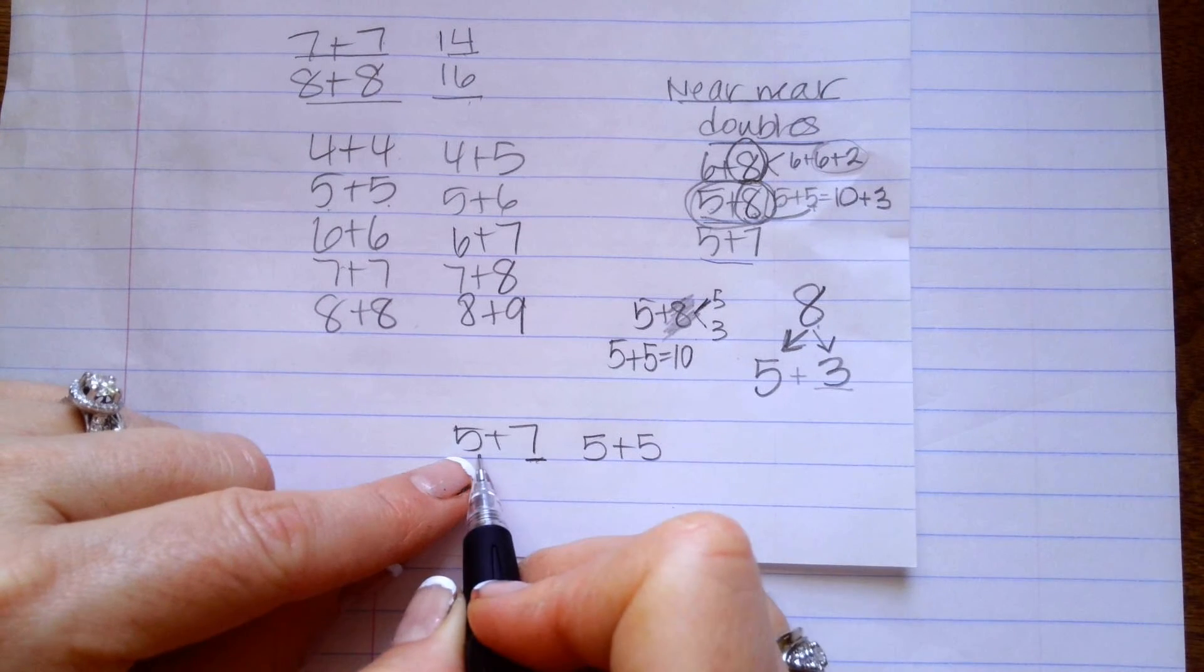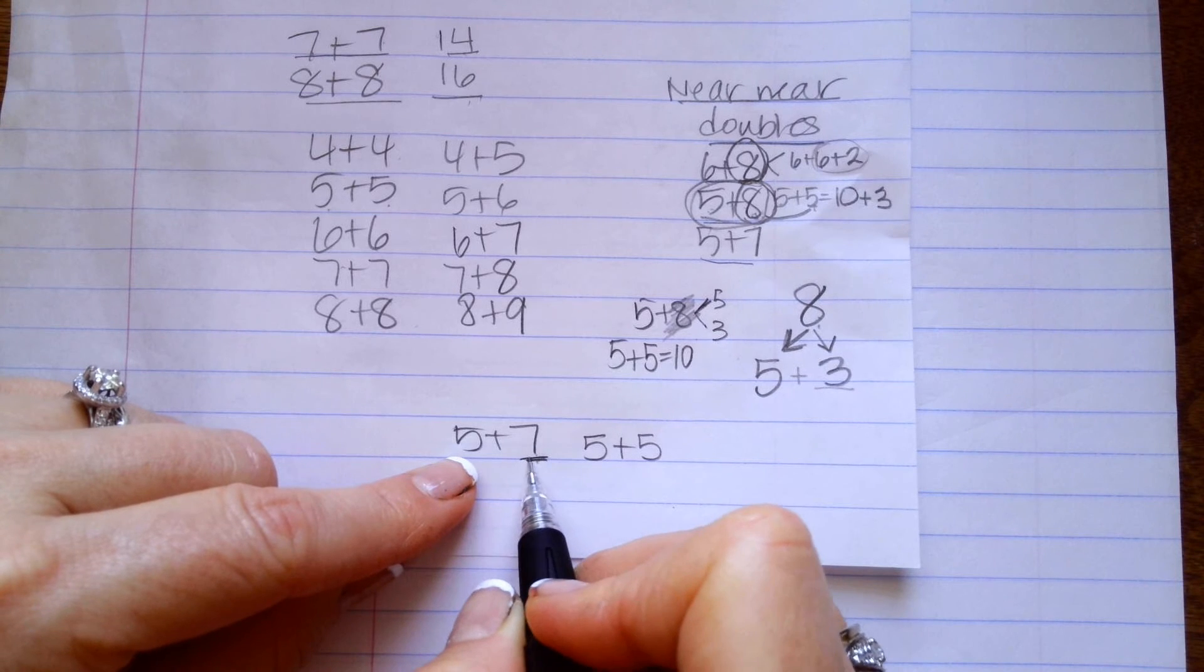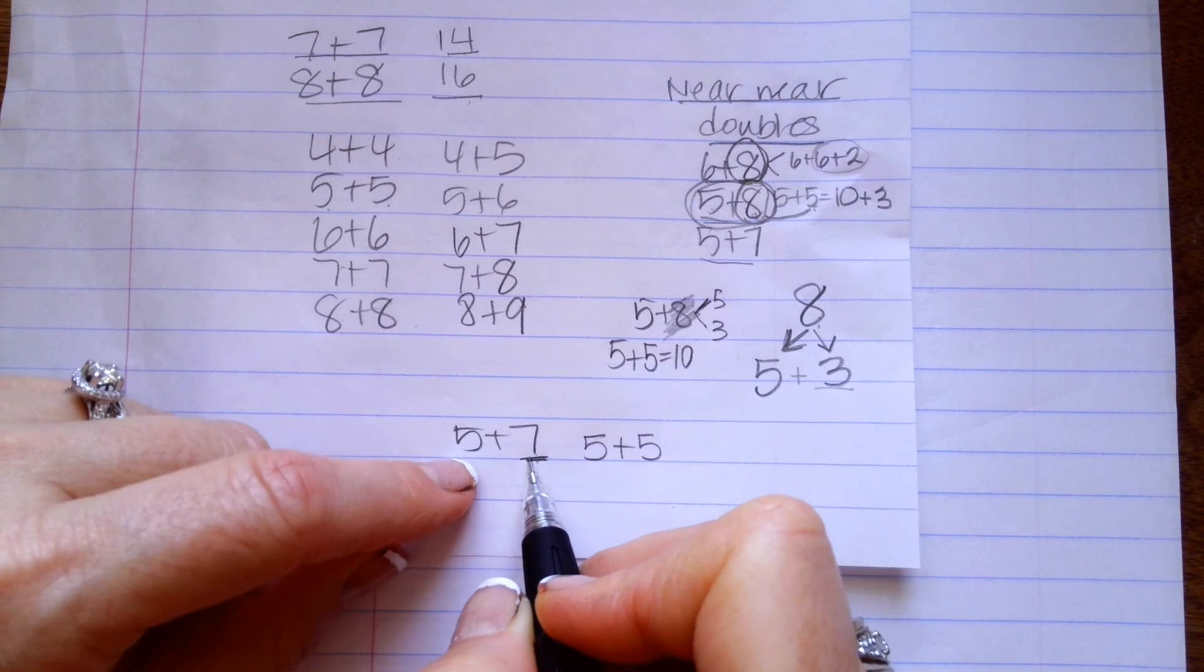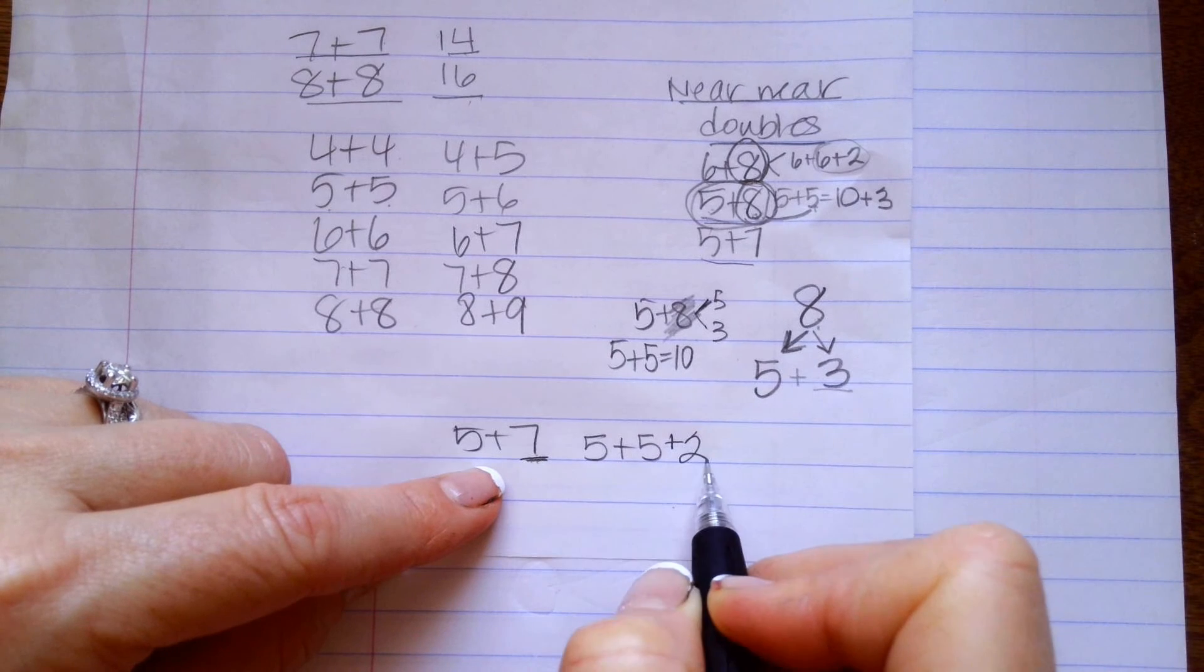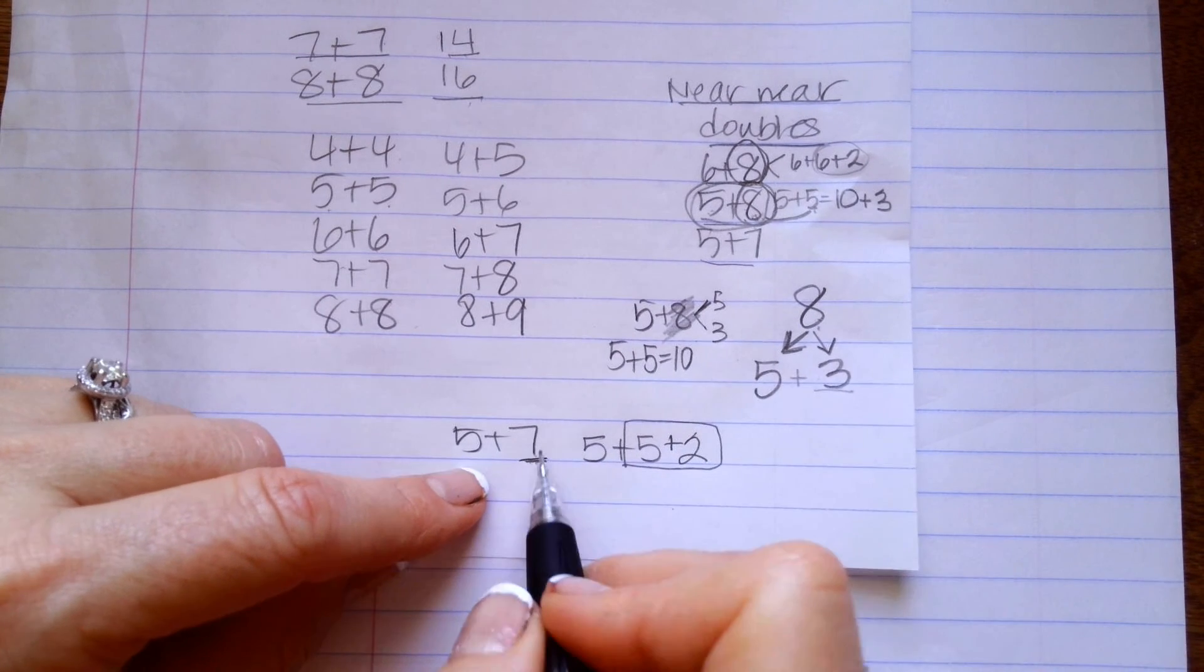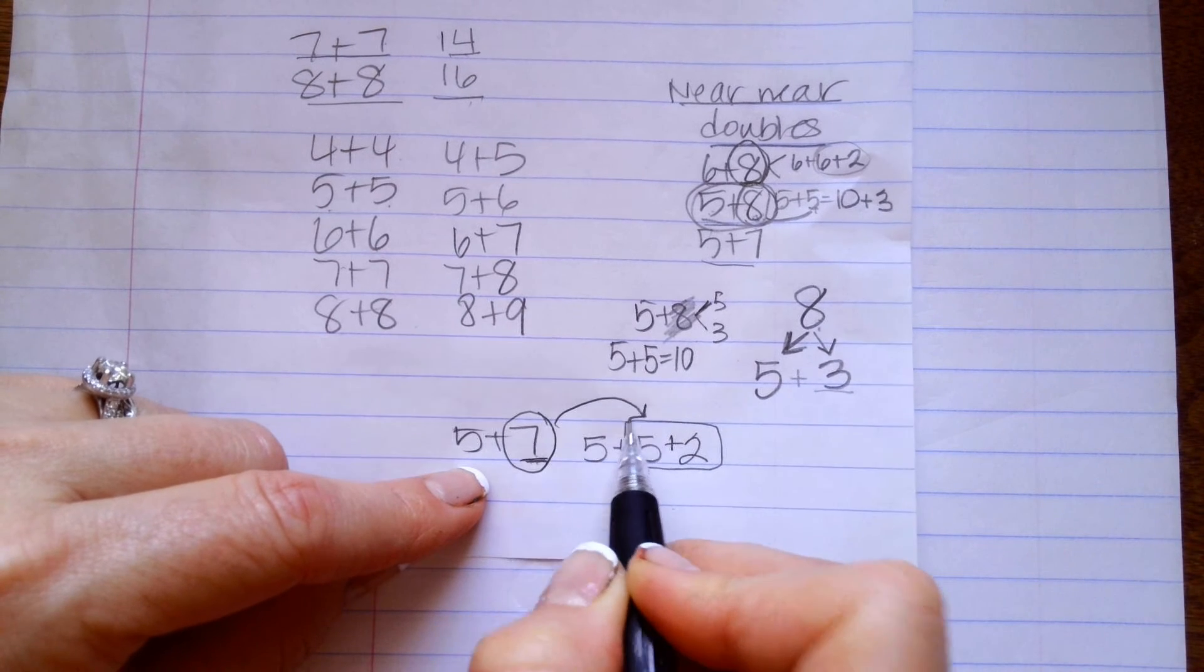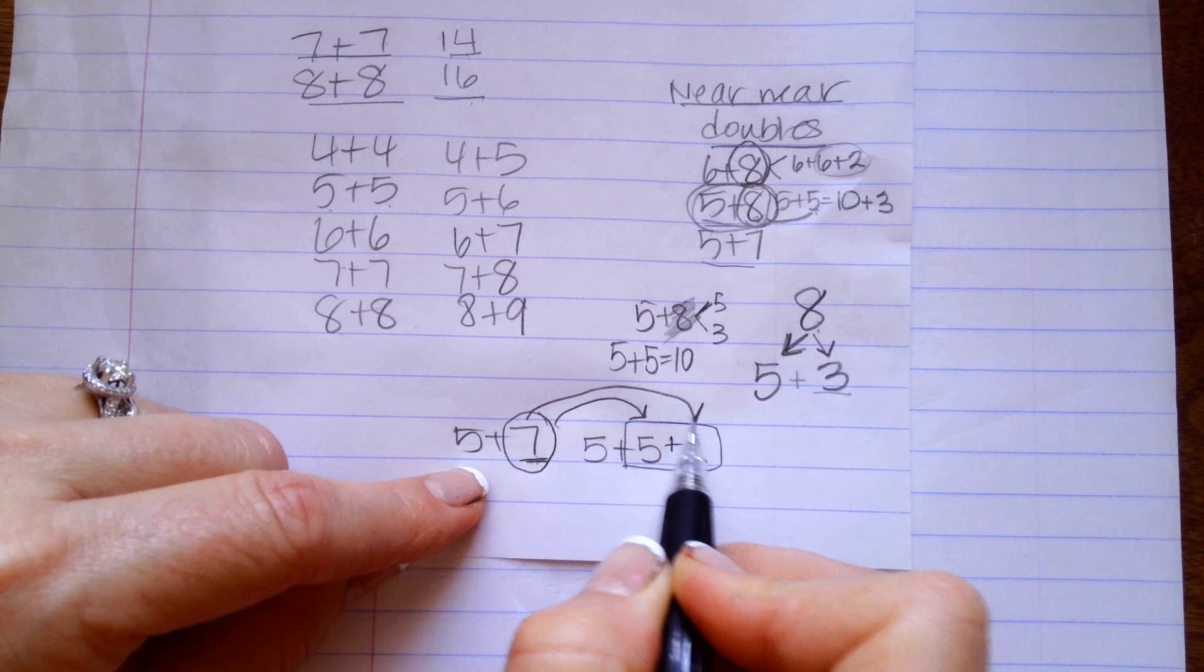5 plus 8, and 5 plus 7, I can turn into a near, near double. So, if I change this into a 5 plus 5, I can't just change a 7 to a 5. So, I have to add 2 to the back because 5 plus 2 is 7.